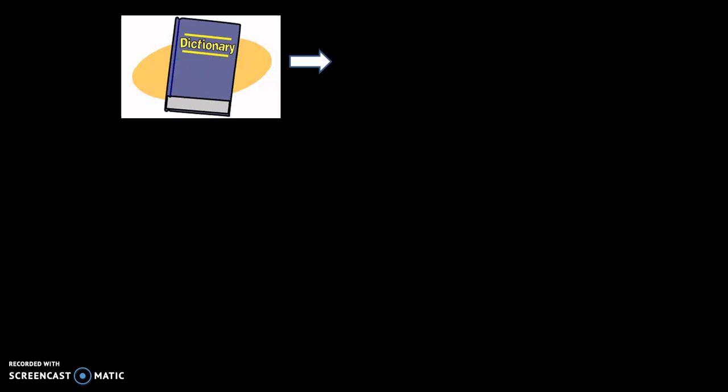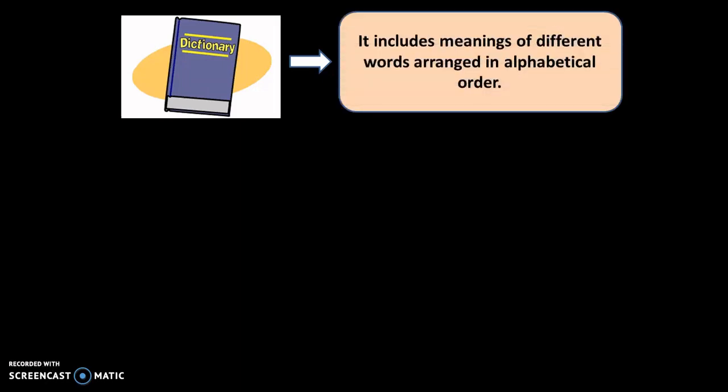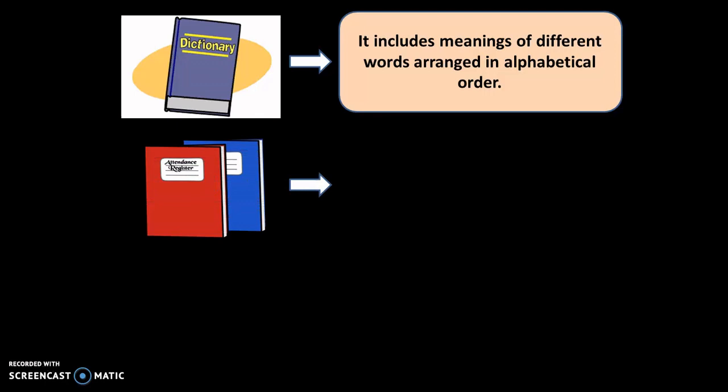Picture one represents a dictionary. Dictionary me kya hota? Dictionary me aapke hota hai words aur unke meanings. And one more thing important about a dictionary is that all these words are arranged in an alphabetical order, right?